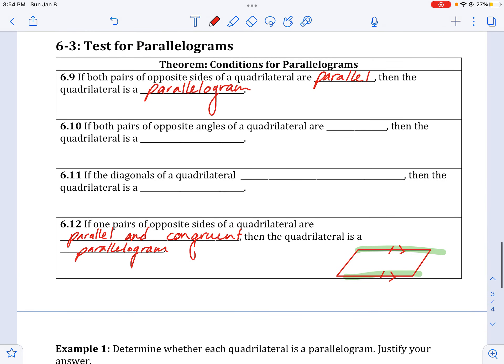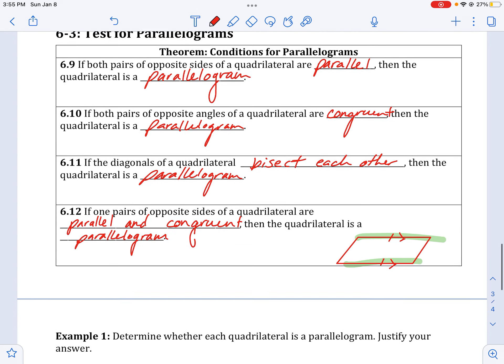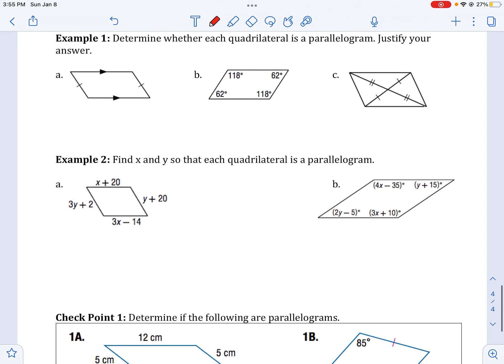If both pairs of opposite sides are congruent, then it must be a parallelogram. Then you know you've got a parallelogram.